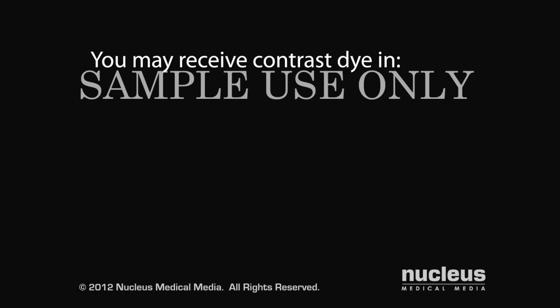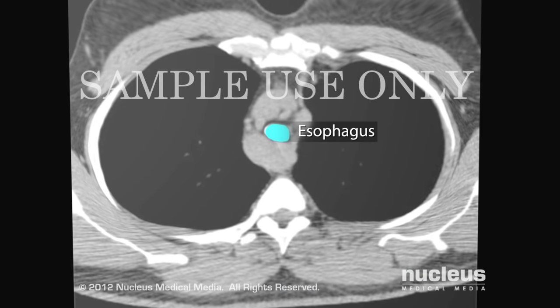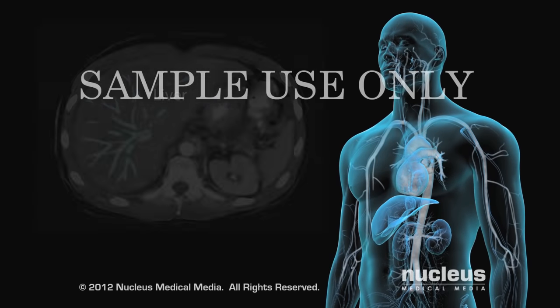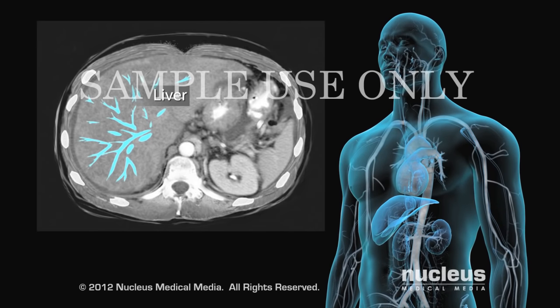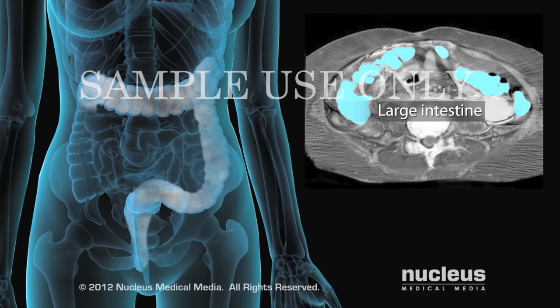In some cases, you may receive contrast dye before your procedure in a drink, an injection, or a barium enema to make it easier for your doctor to see certain areas of your body. If you received a drink with contrast dye, your esophagus or stomach will be highlighted. If you received an injection, your blood vessels, gallbladder, liver, or urinary tract will be highlighted. If you received a barium enema, your large intestine will be highlighted.